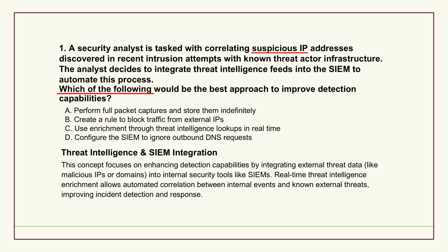The material gives four options. First, full packet captures — basically record everything. Second, just block all external IPs, which sounds a bit drastic and disruptive. Third, real-time threat intelligence enrichment. And fourth, just ignore outbound DNS requests. Full packet capture sounds thorough, but analyzing all that data later seems impossible — like finding a needle in a universe of haystacks.